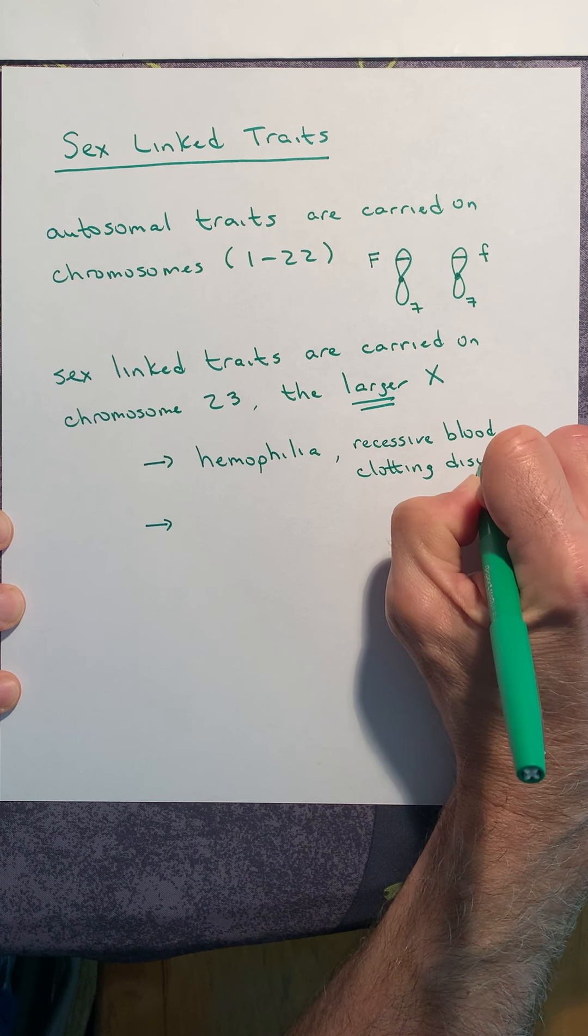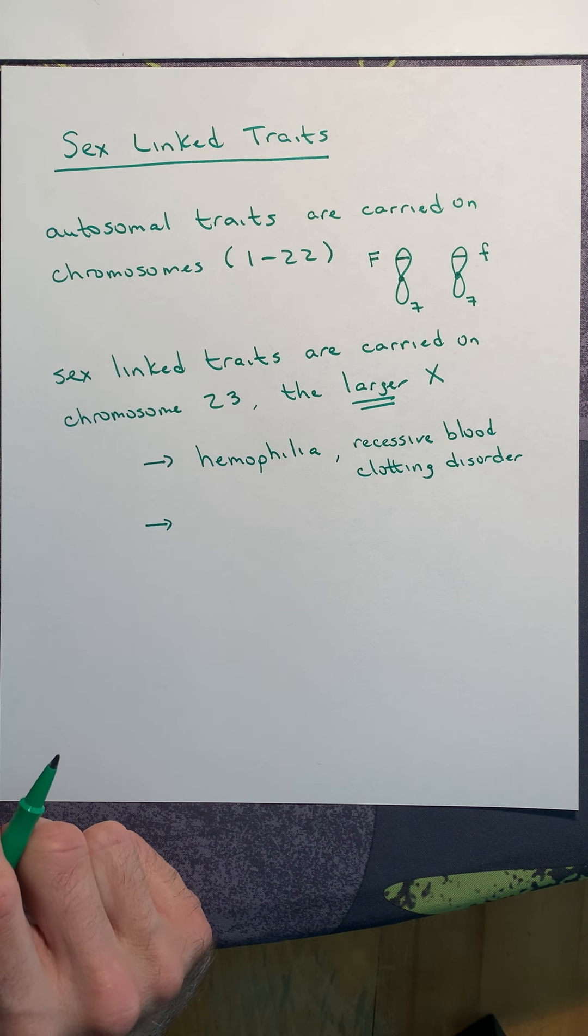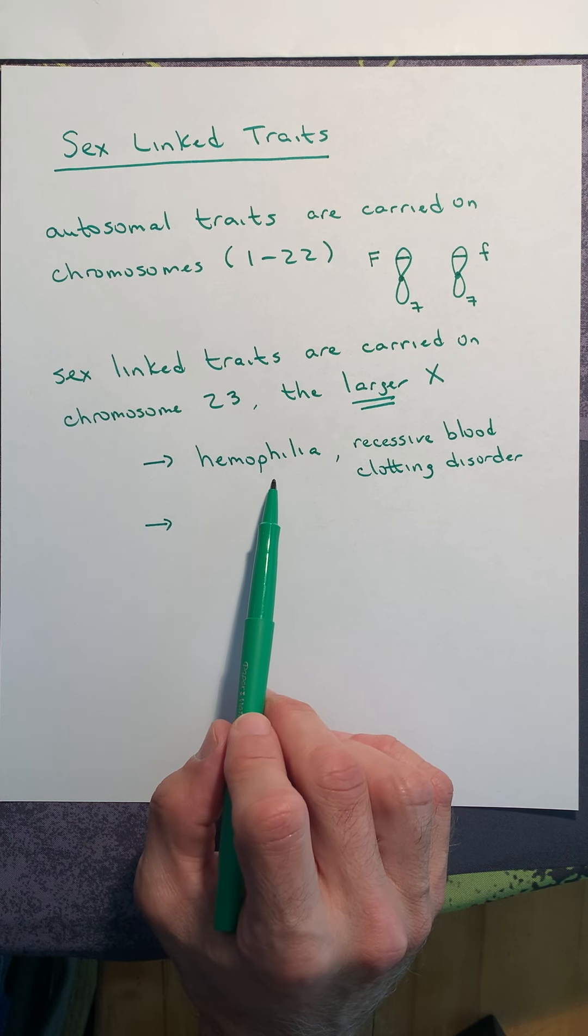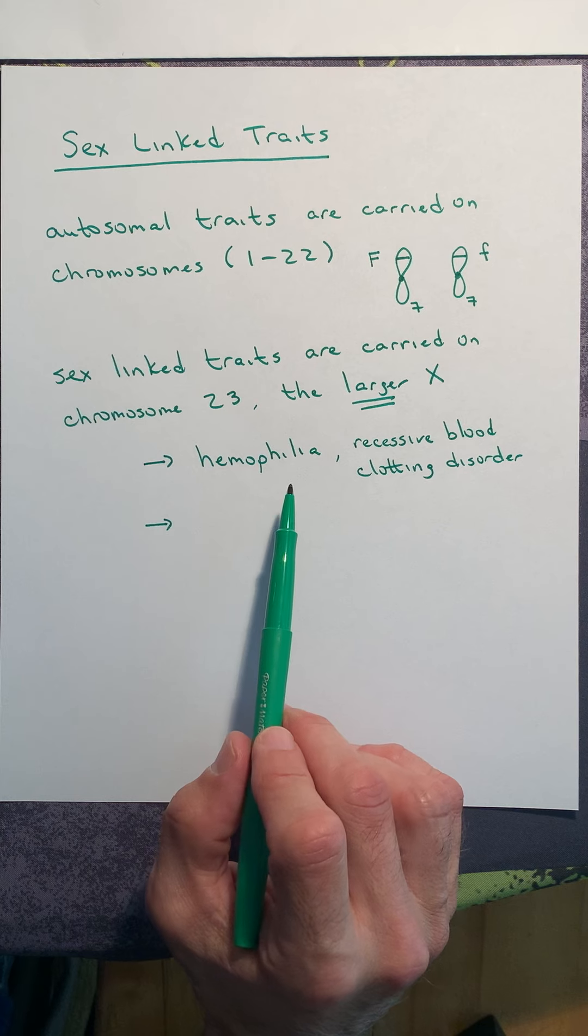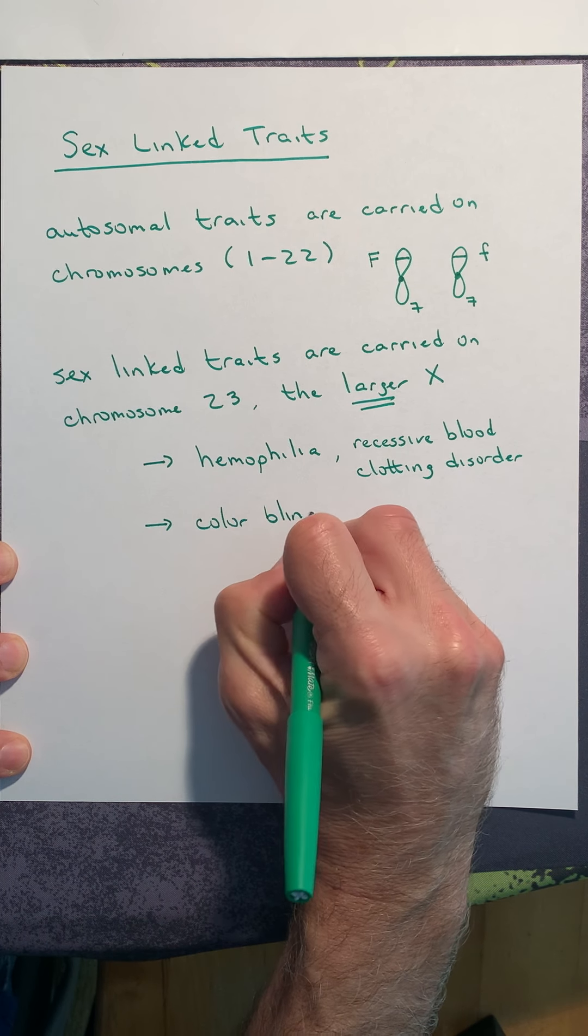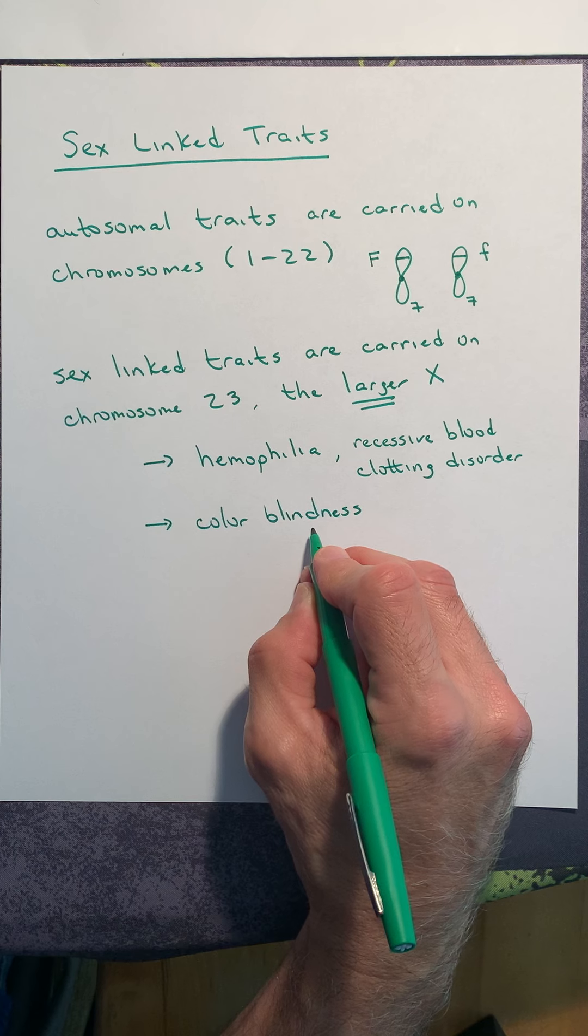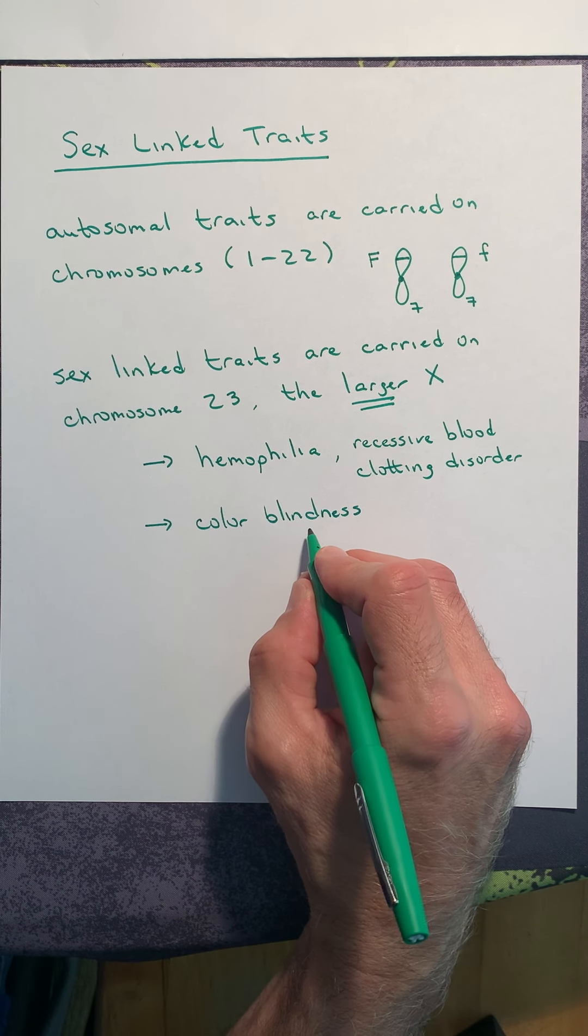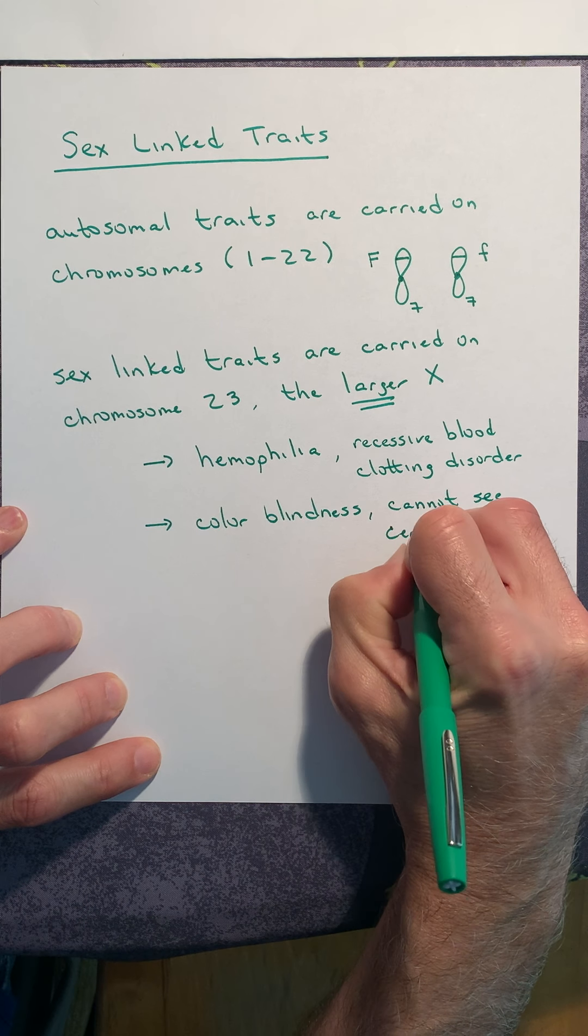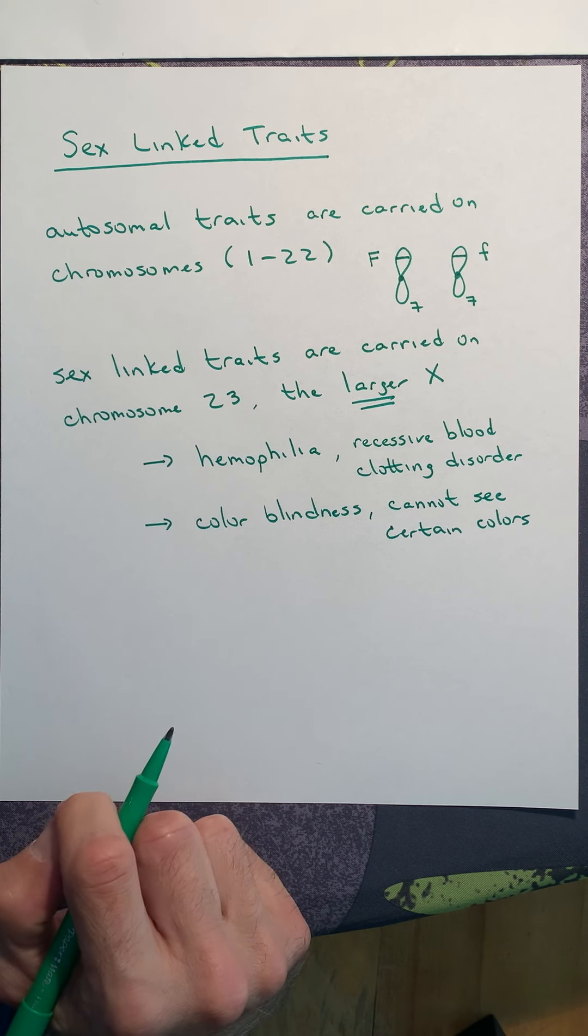And there are two classic examples that you always talk about when it comes to sex linked traits. There's a bleeding disorder called hemophilia. And this is a recessive blood clotting disorder. Now, when most of us get a cut or any blunt force trauma and our blood starts to leak out of our veins or more seriously out of our arteries, our blood clots to block that bleeding. And a hemophiliac is at risk because their blood doesn't clot properly. Now, there's different severities of hemophilia. Some are very mild cases. Some are very serious.